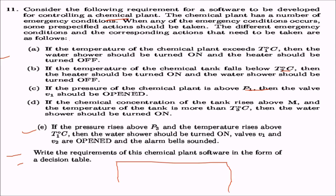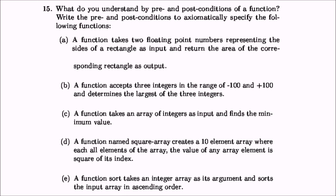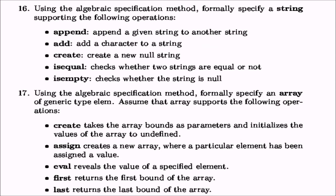You need to write the requirements of this chemical plant software in the form of a decision table. I will leave this as an exercise — you know how decision tables are made. Similarly, questions 12 through 17 involving decision trees, decision tables, and pre/post conditions of functions, as well as algebraic expression methods, I leave as exercises. I have already covered these in the discussion session so you should be able to complete them.